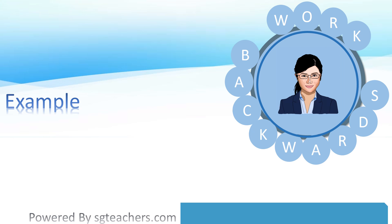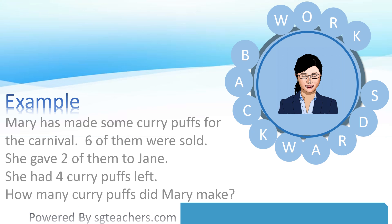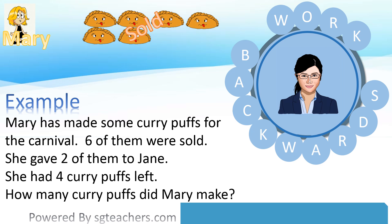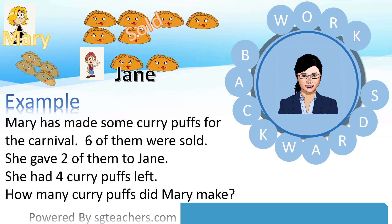Let me show you an example. Mary has made some curry puffs for the carnival. Six of them were sold. She gave two of them to Jane. She had four curry puffs left. How many curry puffs did Mary make?